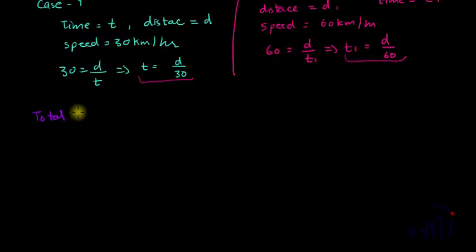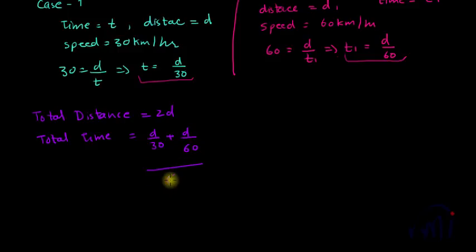So total distance is equal to 2D and total time taken is equal to D by 30 plus D by 60. So if I take the LCM, LCM will be 60.